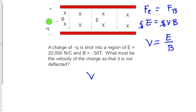To calculate the velocity that would be unaffected by the electric field and magnetic field, we'll take 20,000 divided by 0.50 for the magnetic field. The electric field is 20,000. The magnetic field is 0.5. That will give us 40,000 meters per second. So charges that encounter this velocity selector that are moving 40,000 meters per second will go through in a straight line to come out the other side.